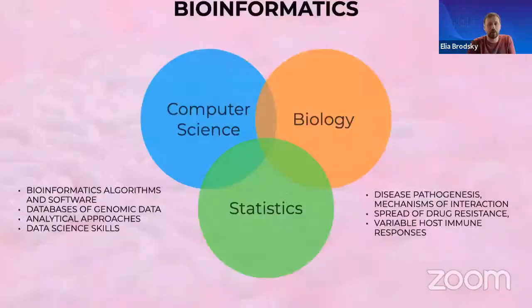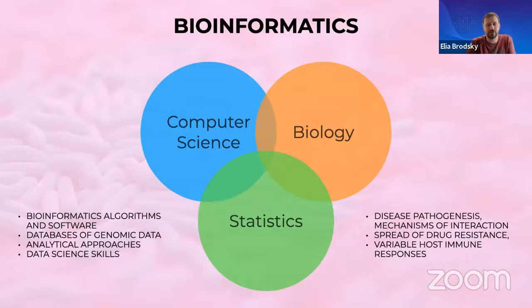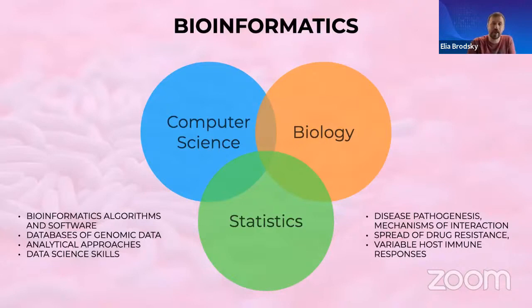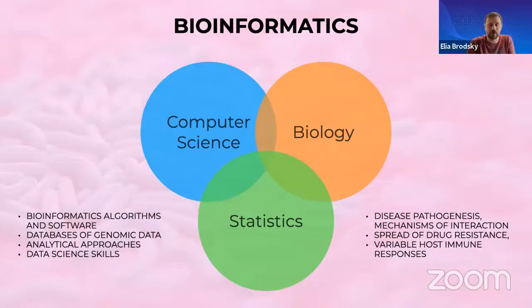Bioinformatics is the intersection of computer science, biology, and statistics. We apply algorithms and software, rely on databases of different data types, and use data science skills to analyze data. But this data isn't meaningful unless we understand the biological context — the specifics of infectious diseases, pathways, different pathogens, and the biology of host-pathogen interaction. In the middle are statistical and machine learning skills driven by our ability to structure data and ask generalizable questions relevant not just to a particular study but to broader biological phenomena.